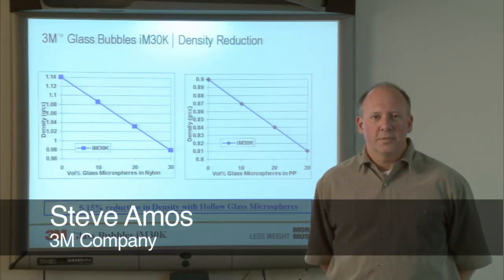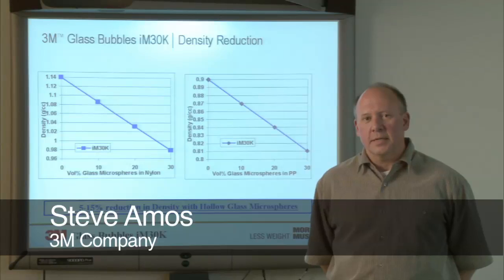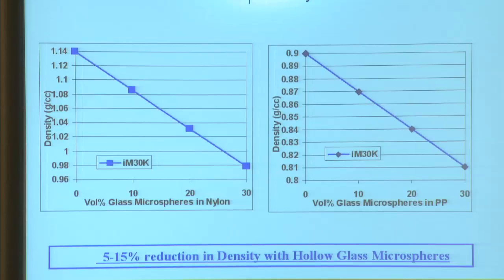Glass bubbles can be used to lightweight plastic composites. I'm showing graphs on this slide — nylon on the left and polypropylene on the right — that show the reduction in density of the composite material as we increase the volume percent of glass microspheres.